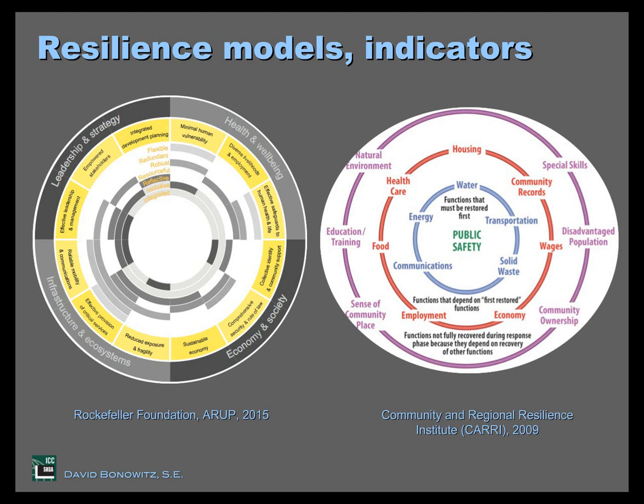I actually like the Rockefeller model better. In this other model, if you look closely at the black text, they're identifying the idea that some things are higher priorities in terms of when they get restored after an event. That's an idea we'll come back to.